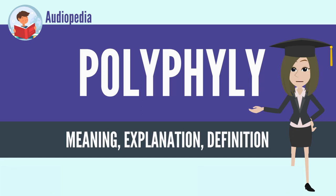Researchers concerned more with ecology than with systematics may take polyphyletic groups as legitimate subject matter. The similarities in activity within the fungus group Alternaria, for example, can lead researchers to regard the group as a valid genus while acknowledging its polyphyly.